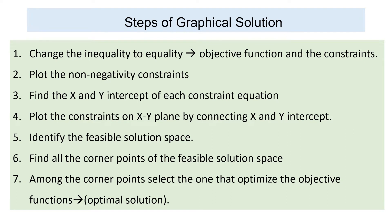To find the intercepts, we make one variable zero and find the other. If we make x equal to zero, we find y, and if we make y equal to zero, we find x. The fourth step is to plot the constraints on the XY plane by connecting the x and y intercepts.